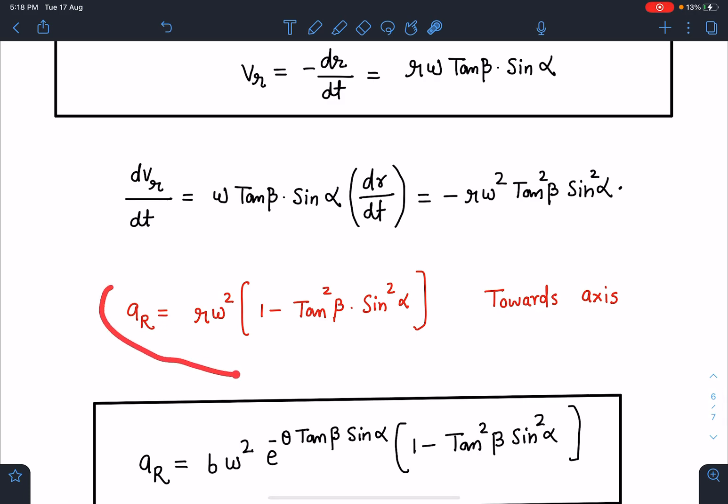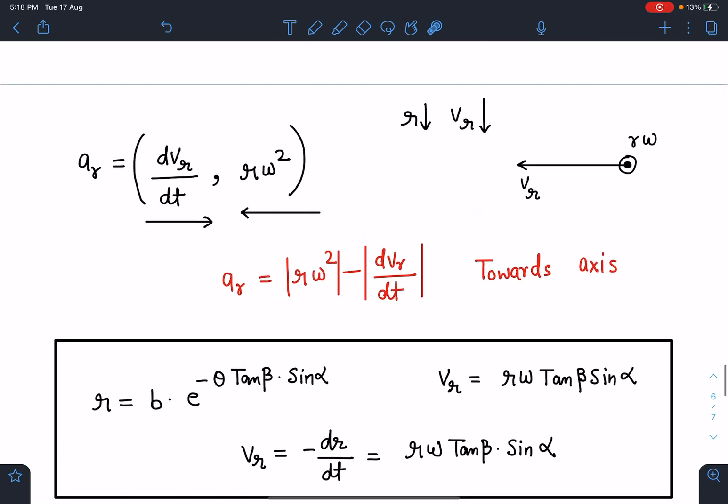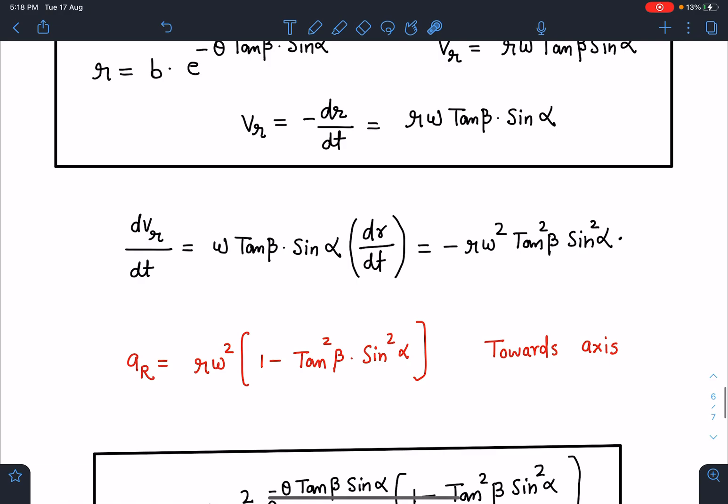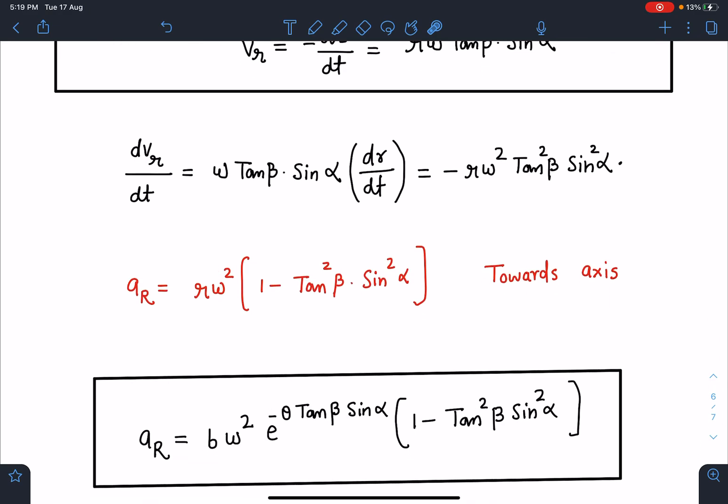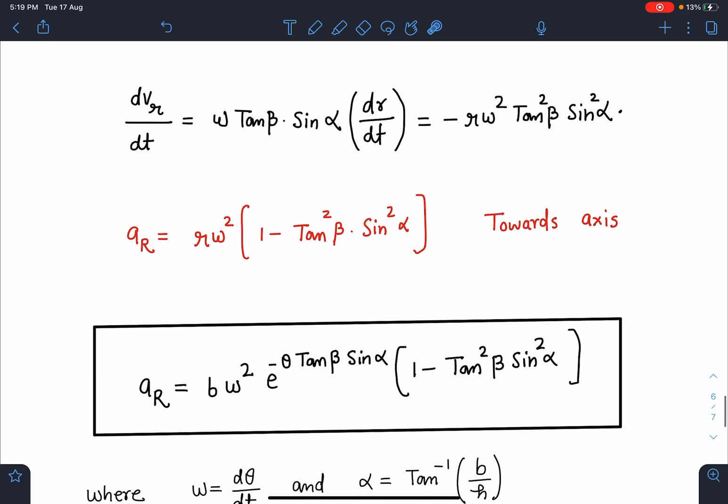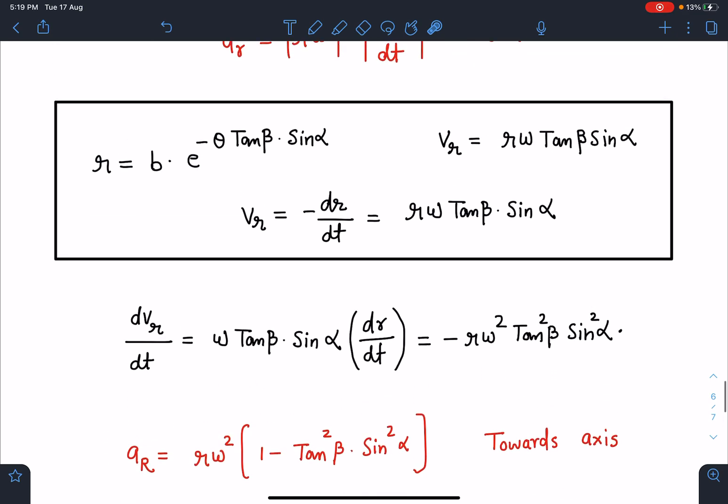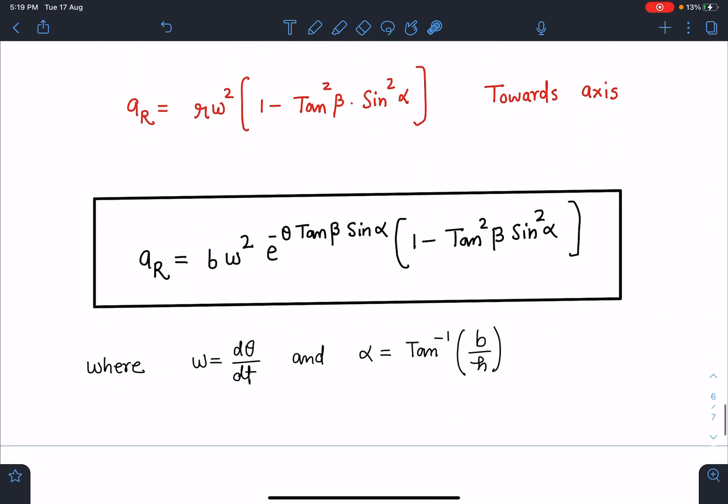After this, the overall value of aᵣ is rω² minus dV_R/dt. Substituting dV_R/dt, I can take rω² common and this becomes 1 minus tan² β sin² α towards the axis. Then substitute the value of r. Finally, the radial acceleration expression is bω² e to the power minus θ tan β sin α times (1 minus tan² β sin² α), where ω is dθ/dt and α is tan⁻¹(b/h). This is the final answer.